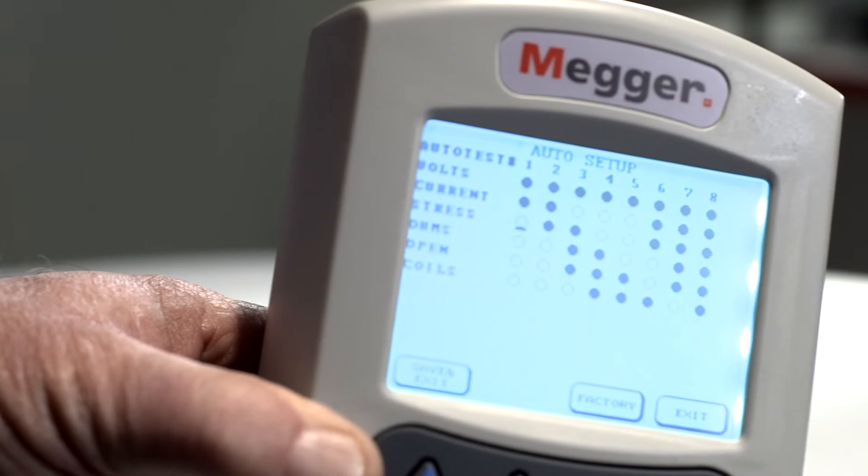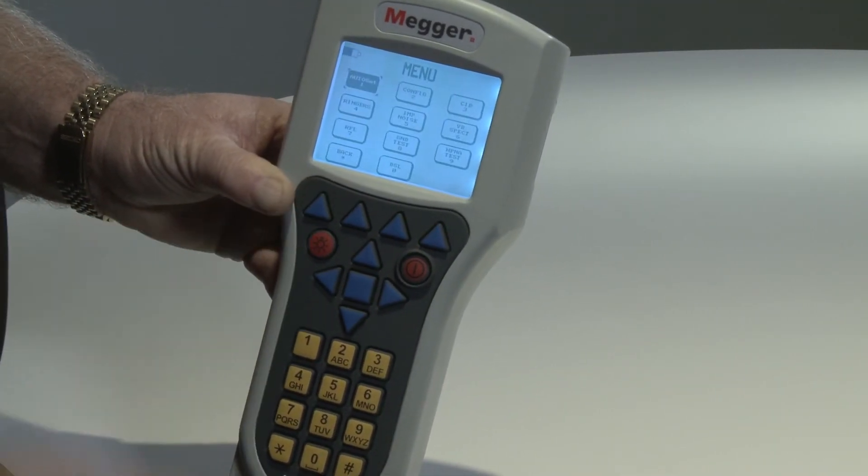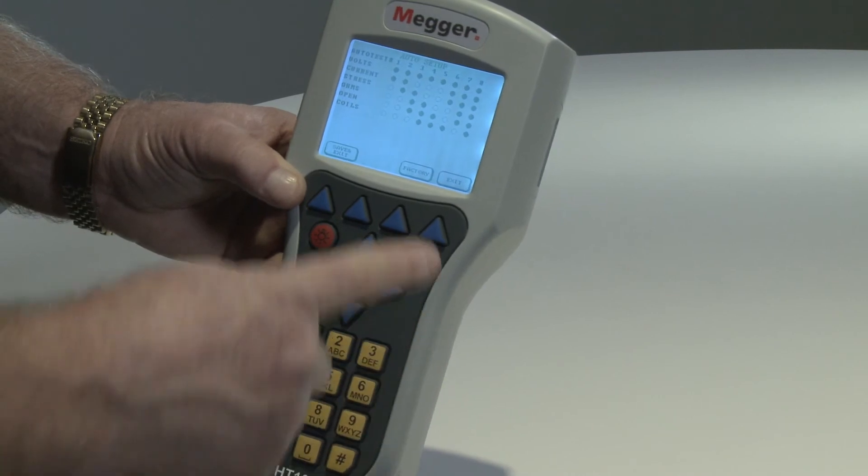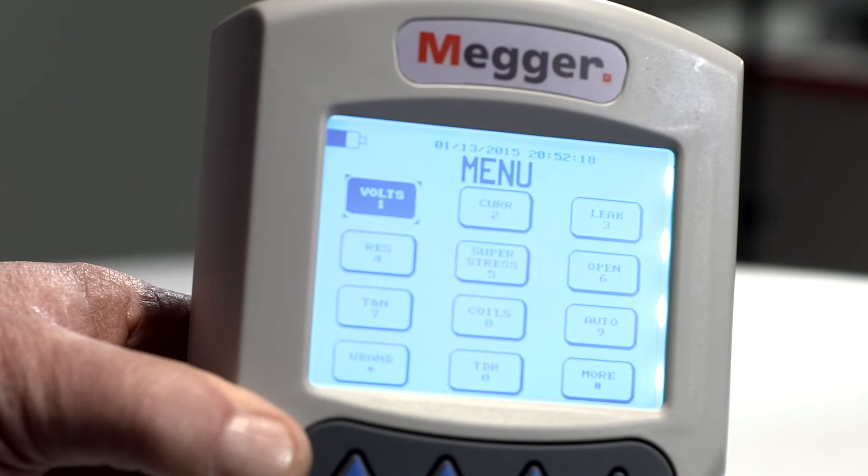When complete, press the Save and Exit multifunctional soft key. To return to the main menu screen, press the Exit multifunctional soft key located on the keypad below the icon, and then the back asterisk alphanumeric key.